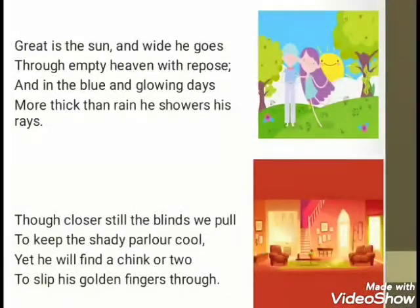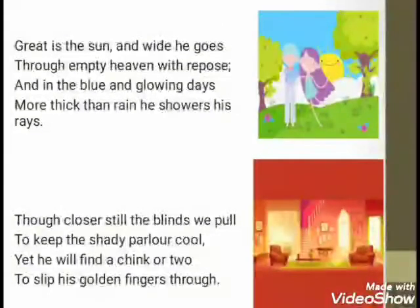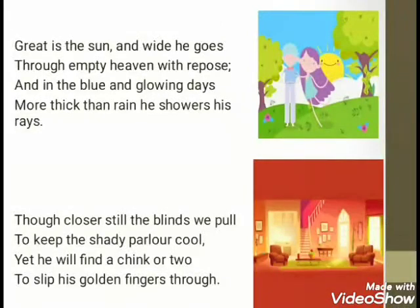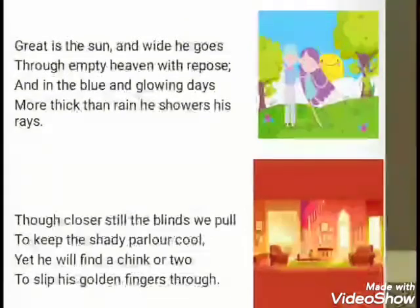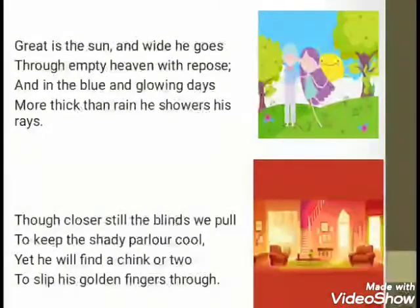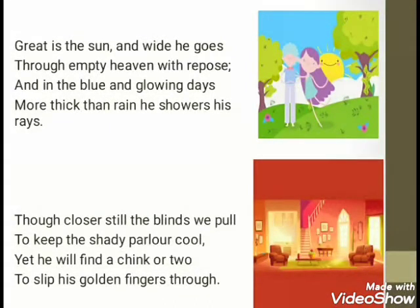'Blue and glowing days' refers to summer days. In summer, the sky is very clear and blue, so the poet has described those days as blue and glowing. The poet tells us that on summer days the Sun showers his rays, and those rays are thicker than drops of rain. The poet personifies the Sun, saying he travels a vast distance across an empty expanse of sky without rest, and on clear summer days his rays come down thicker than rain.